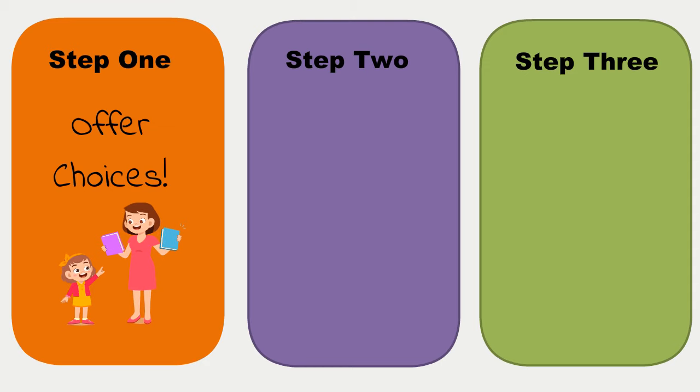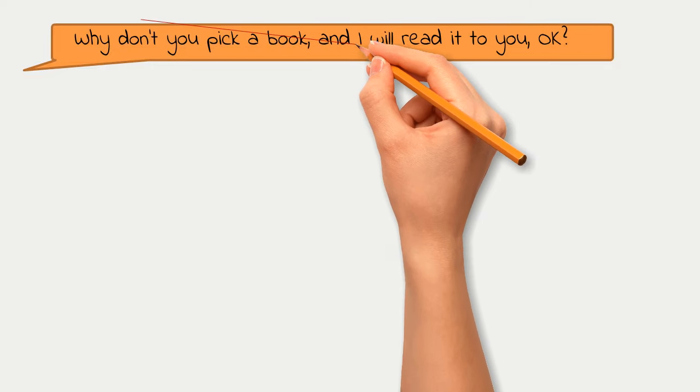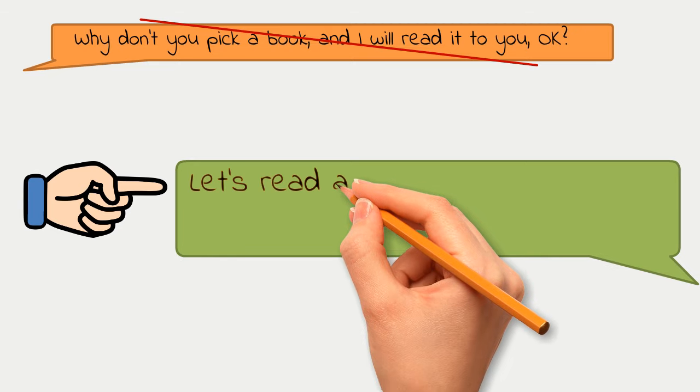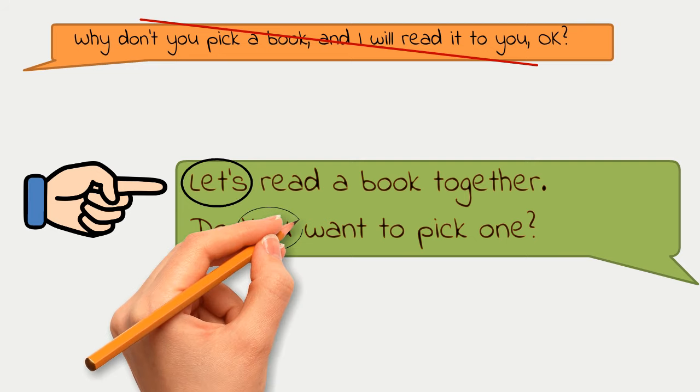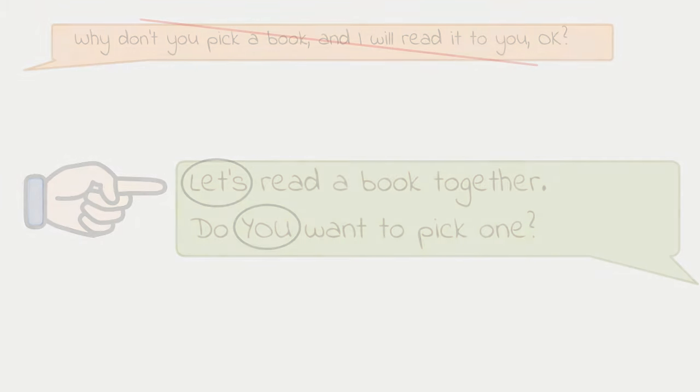Here are some tips about how you can ask. Instead of saying 'Why don't you pick a book from this pile and I'll read it to you, okay?' try something like this: 'Let's read a book together. Do you want to pick one?' The second way of asking is more inviting. It makes the impression that you really want to read that book too and you're giving your child the privilege to pick.